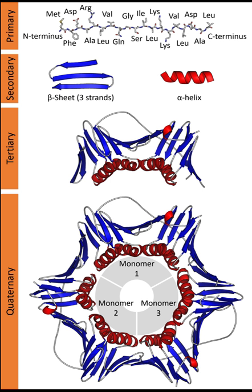The quaternary structure refers to the number and arrangement of multiple protein molecules in a multi-subunit complex. For nucleic acids, the term is less common, but can refer to the higher level organization of DNA in chromatin, including its interactions with histones, or to the interactions between separate RNA units in the ribosome or spliceosome.